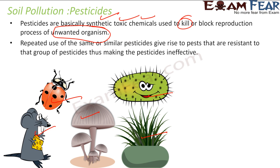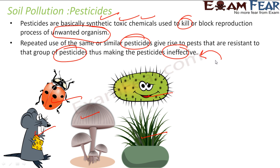However, repeated use of the same pesticides gives rise to pests that are resistant to those pesticides, making them ineffective. You then have to apply stronger pesticides, which again leads to resistance, requiring even stronger pesticides — and with that you are increasing the toxic level of the